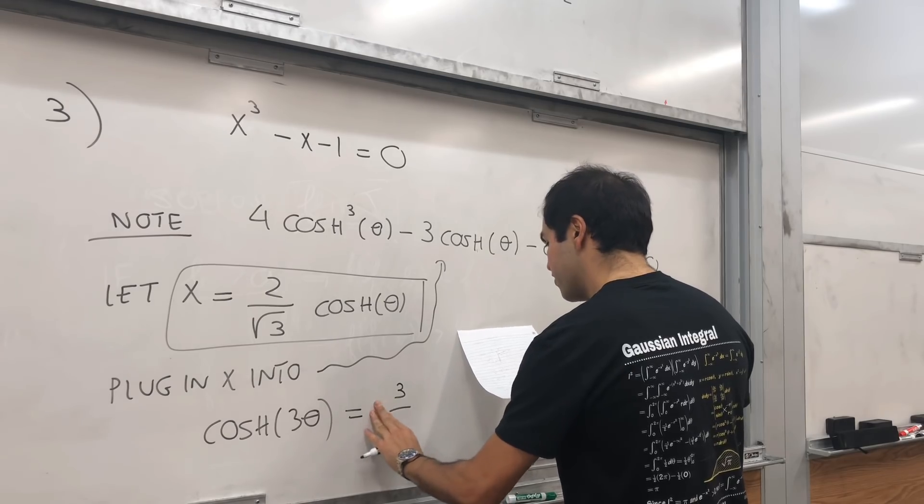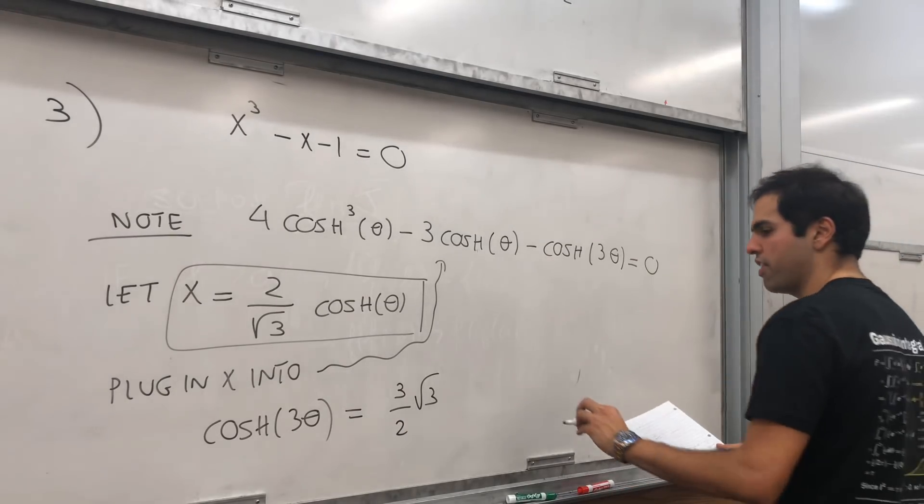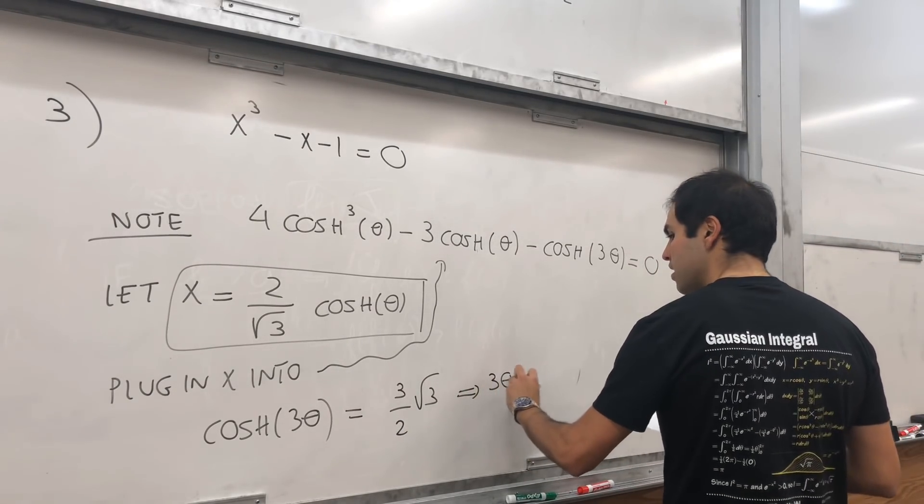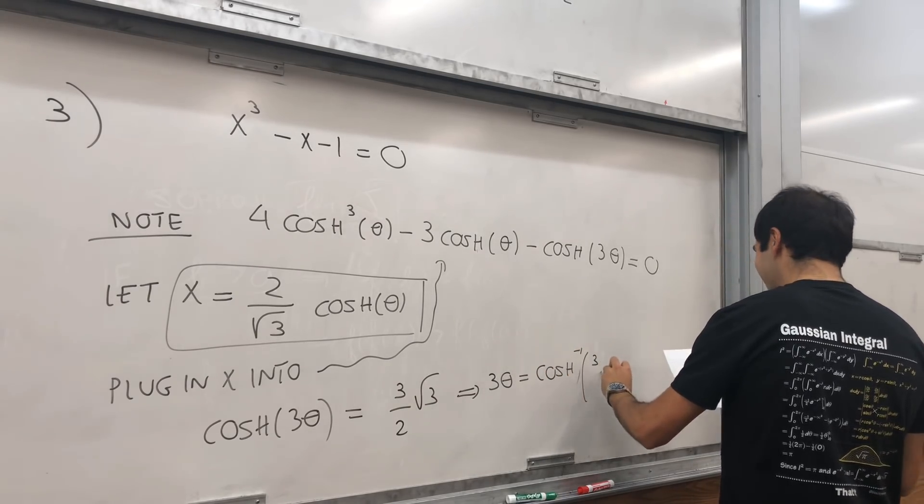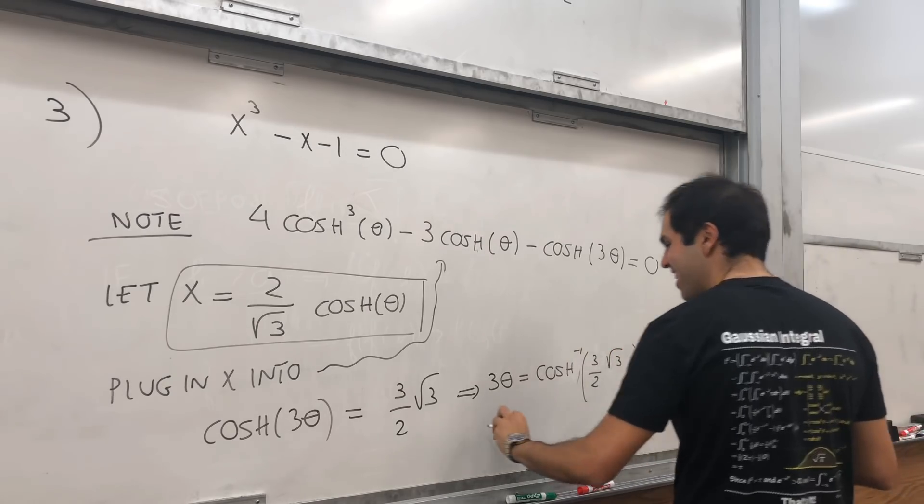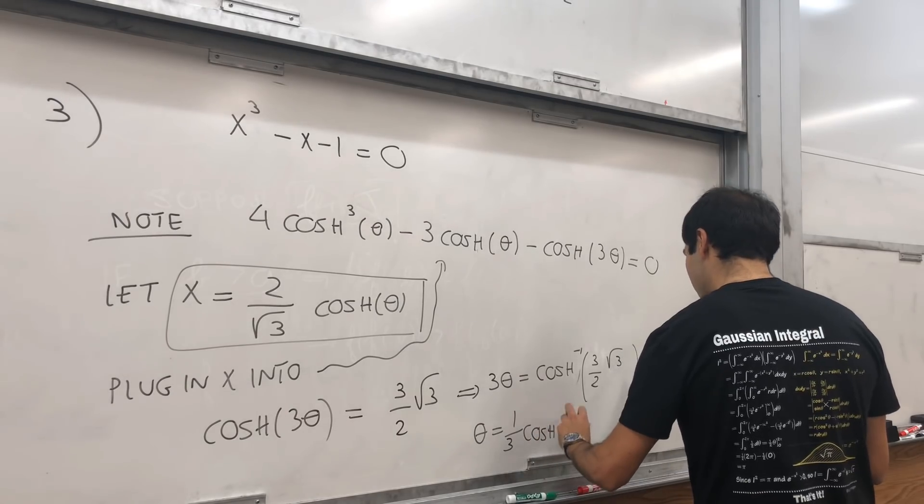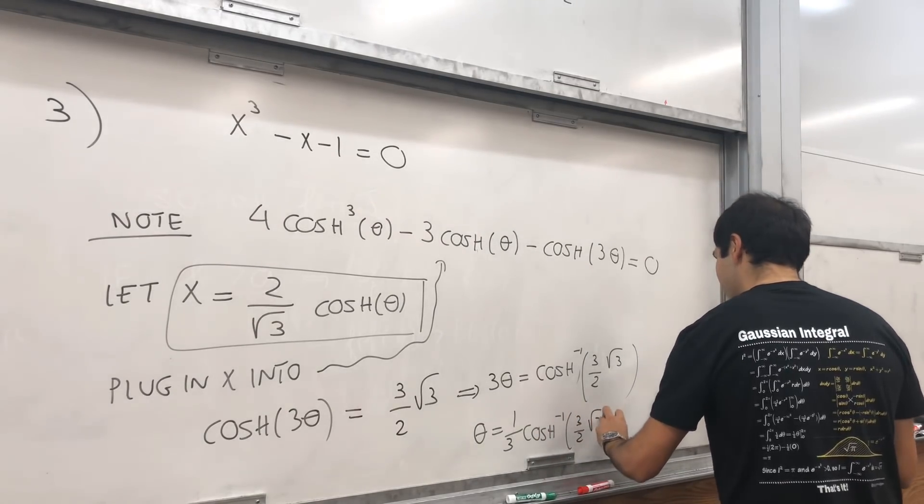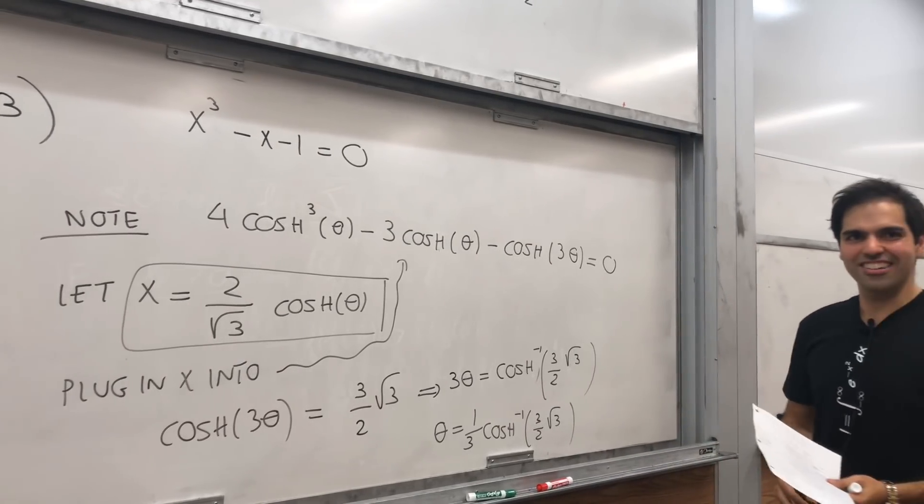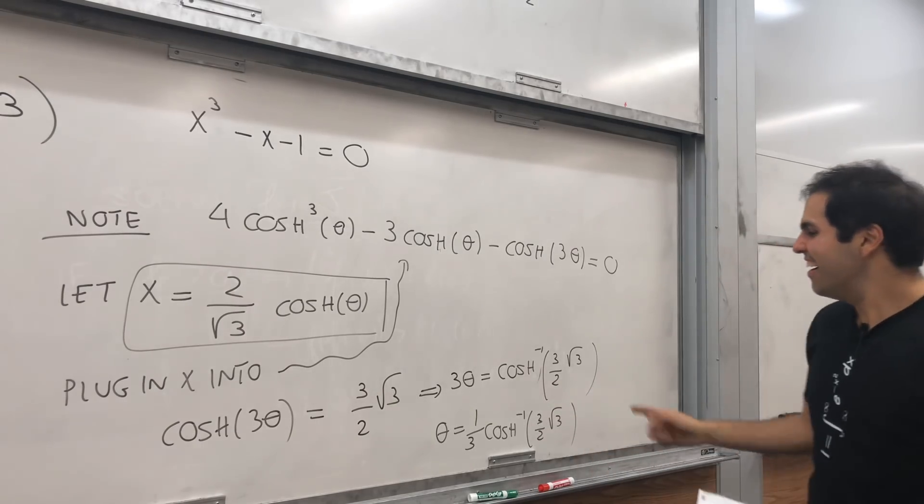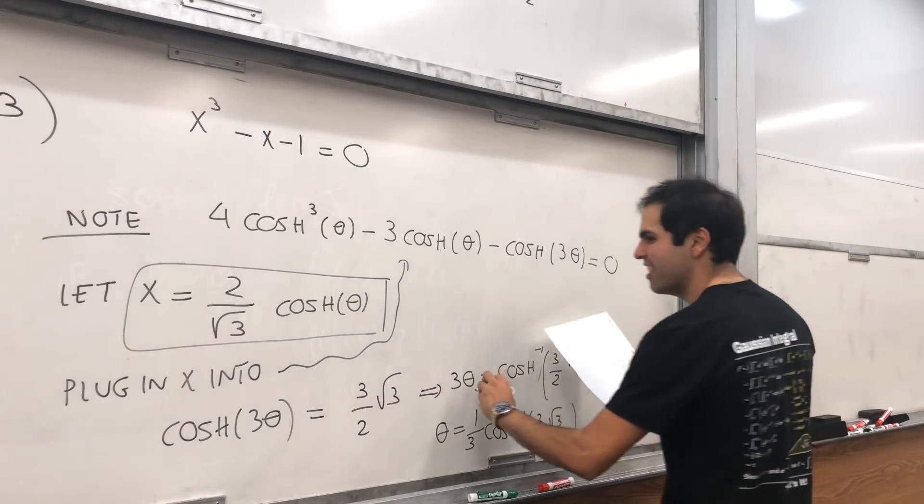Which means you can solve for theta. So you get 3 theta equals arc cosh. When do you see that in life, right? 3 halves of square root of 3. So theta is 1 third arc cosh of 3 halves square root of 3. Almost sounds like a swear word. You're such an arc cosh today. Anyway, so we have theta is that.